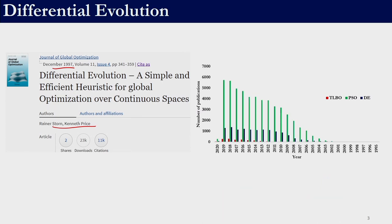This shows the use of the three techniques we have come across: teaching learning based optimization, particle swarm optimization, and differential evolution. TLBO came up in 2011, so obviously it has not been as widely used as particle swarm optimization and differential evolution. But between PSO and DE, particle swarm optimization seems to have attracted more attention than differential evolution.